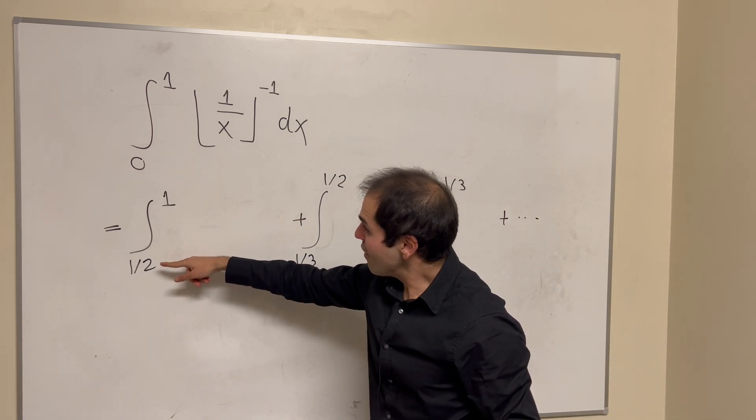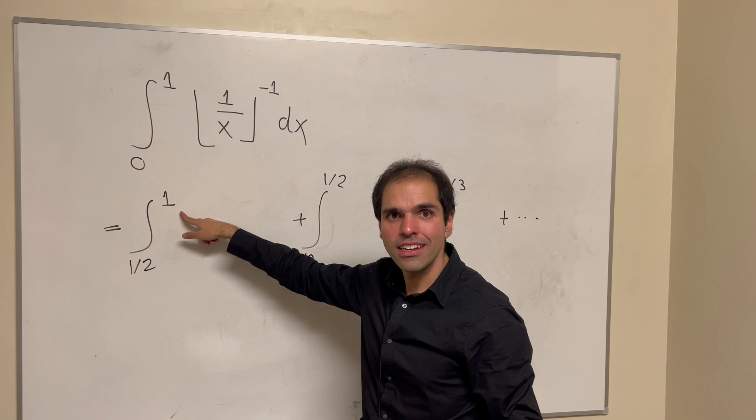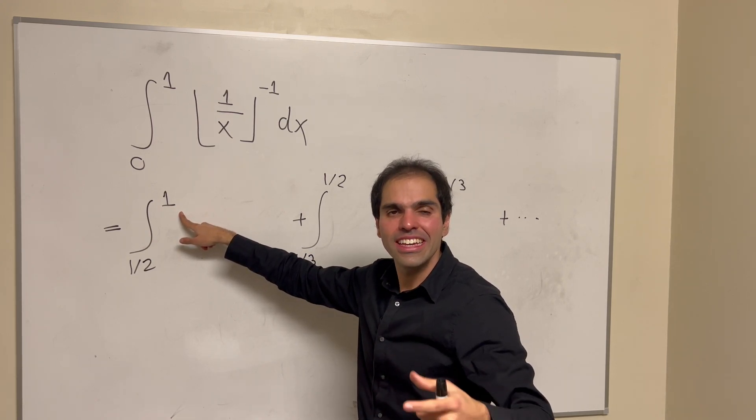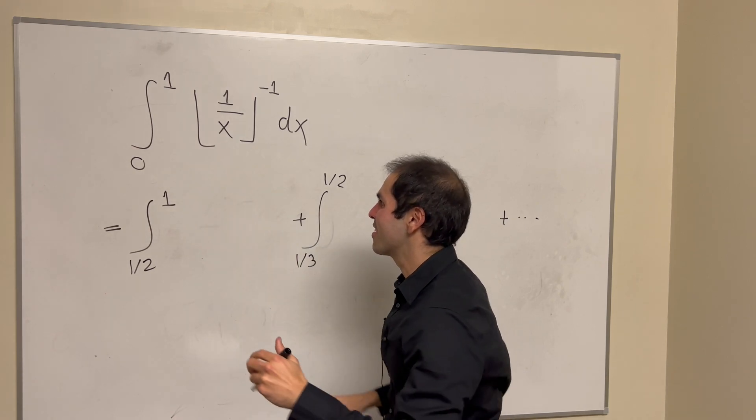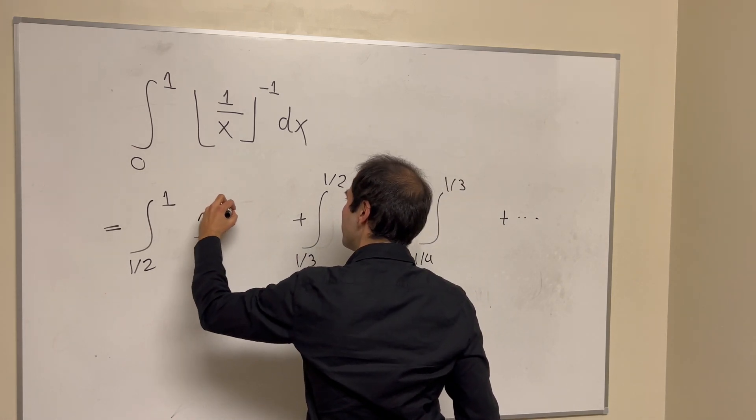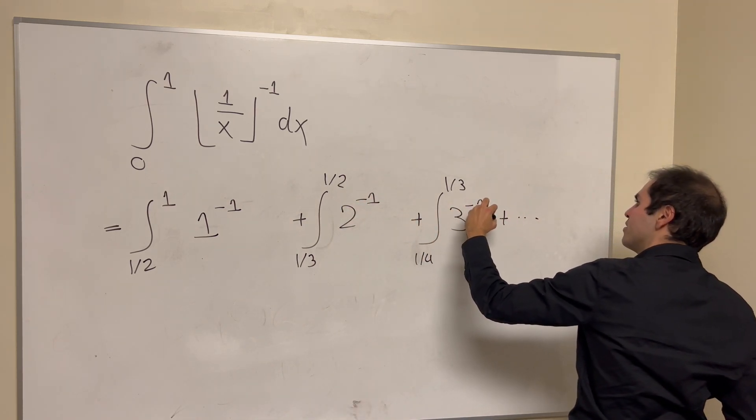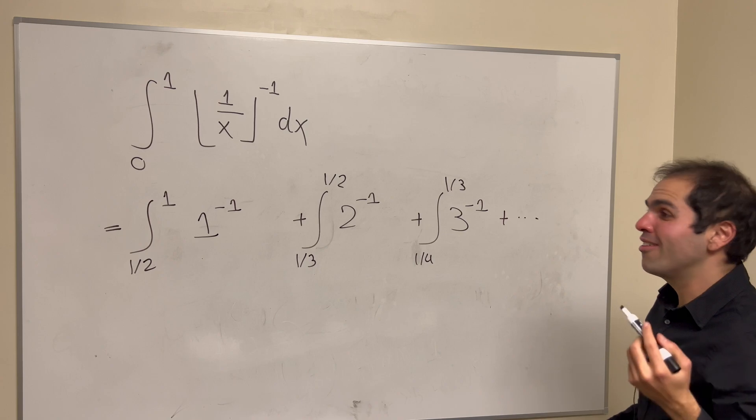Now, if x is between 1 half and 1, then 1 over x is between 1 and 2, so the integer part is just 1. So this becomes 1 inverse, this becomes 2 inverse, this becomes 3 inverse, 1 over 1, 1 half, 1 third.